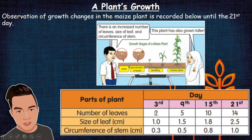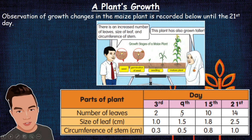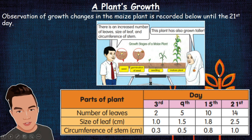On day three there are only two leaves, the size of the leaf is only 1 centimeter, and the circumference of the stem is 0.3 centimeters. After day nine, the number of leaves increases to five leaves, the size of the leaf also increases to 1.5 centimeters, and the circumference of the stem also increases from 0.3 centimeters to 0.5 centimeters.